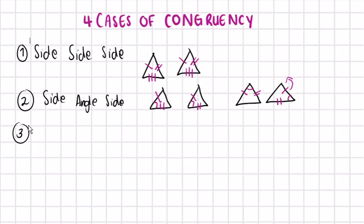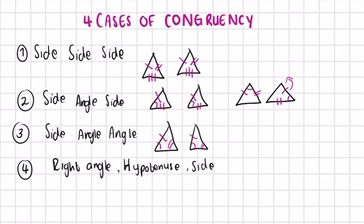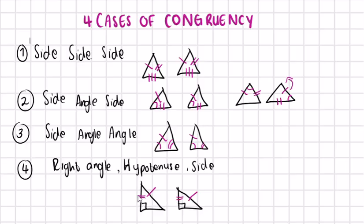The third case of congruency is side-angle-angle. If a side is equal, an angle is equal, and another angle is also equal in both triangles, then these would be congruent. The last case of congruency is right-angle-hypotenuse-side. Here we have two right angle triangles — the right angles are both 90 degrees, the hypotenuse is equal, and an additional side is equal, so the triangles are congruent.